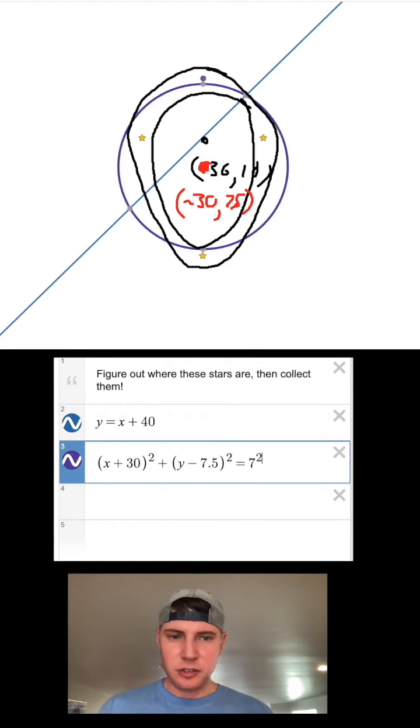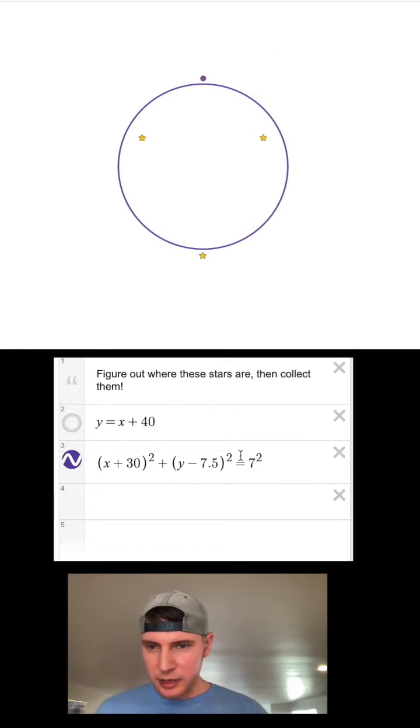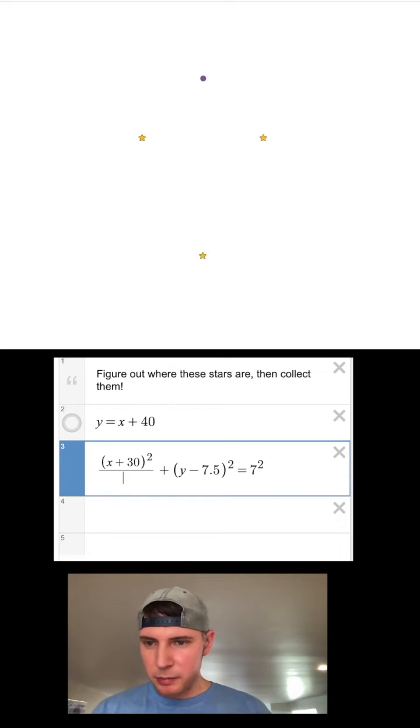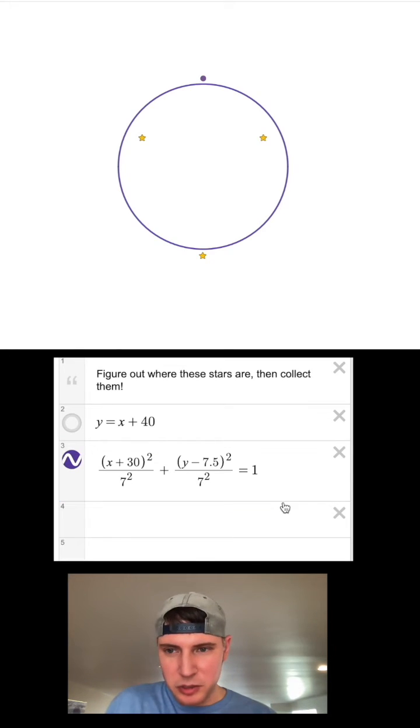To erase everything, let's turn this line off. To change this into an ellipse we need to divide each of these by that radius and set it equal to 1. So I'm going to put a 7² under each of these. Now it's the exact same thing it was before, but the radius is under here.